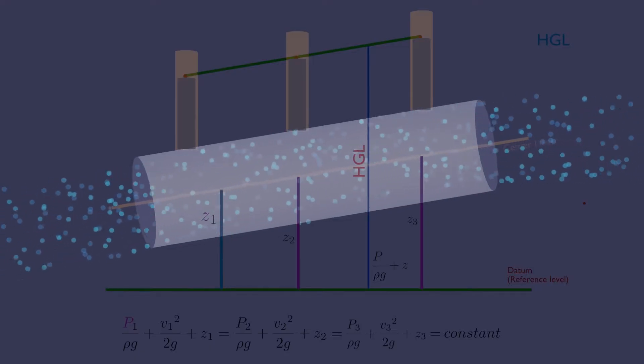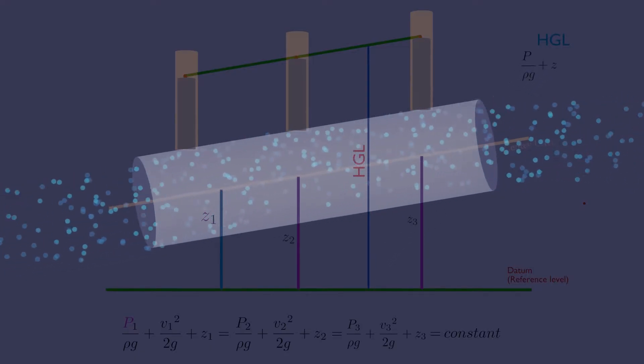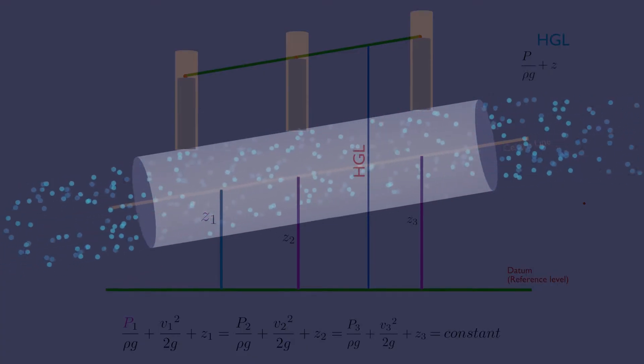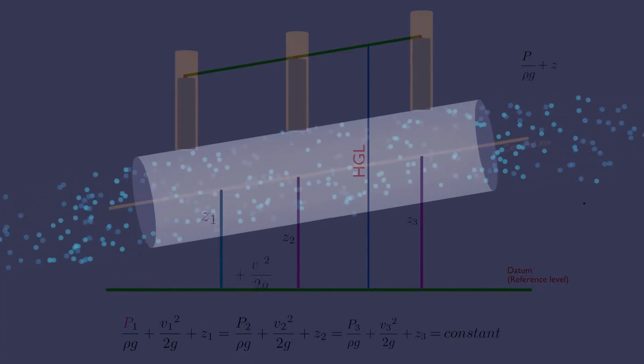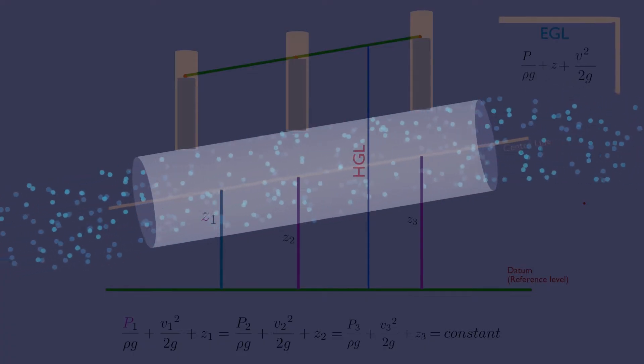You can imagine hydraulic grade line as potential energy, which is related to Earth's gravity and datum. Energy grade line is the sum of potential and kinetic energy, so it's the total energy of a fluid.